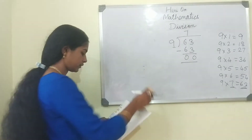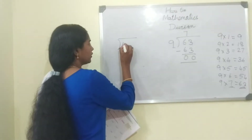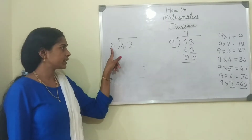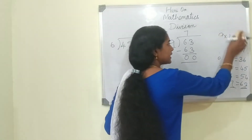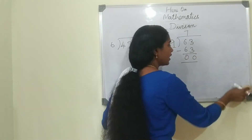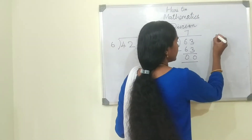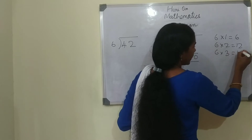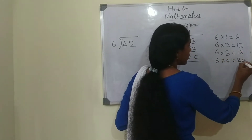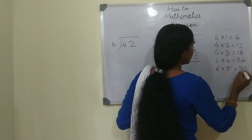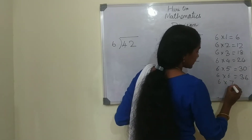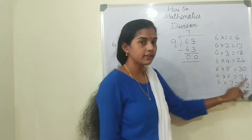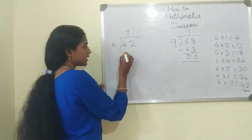Next: 42 divided by 6. Which table should we know now? It is the table of 6. 6 how much are 42? Let us say the table of 6: 6 ones are 6, 6 twos are 12, 6 threes are 18, 6 fours are 24, 6 fives are 30, 6 sixes are 36, 6 sevens are 42. So we are going to write 7 — 6 sevens are 42.